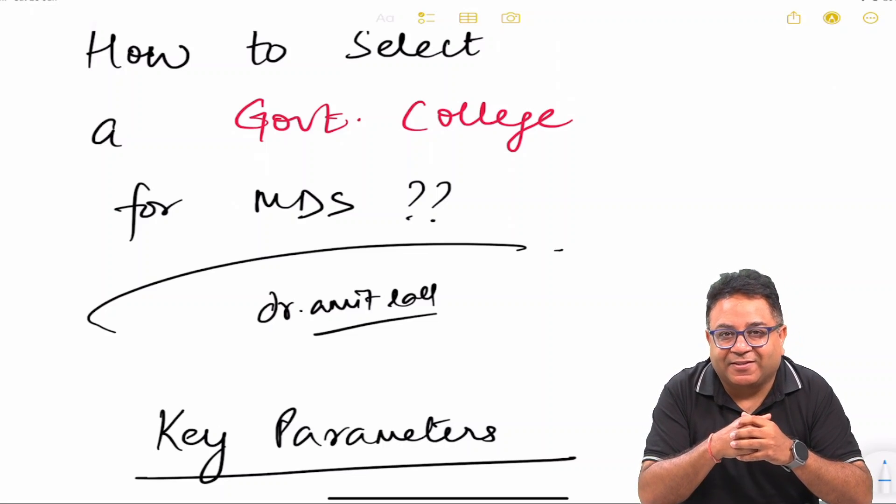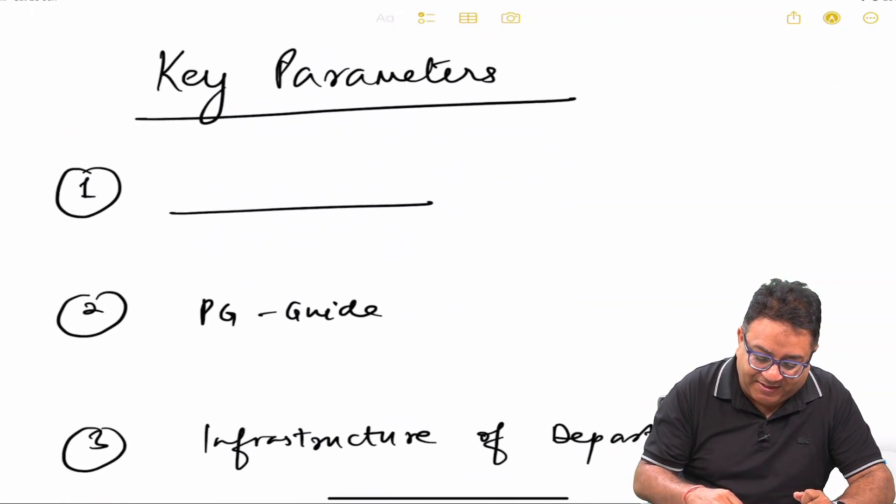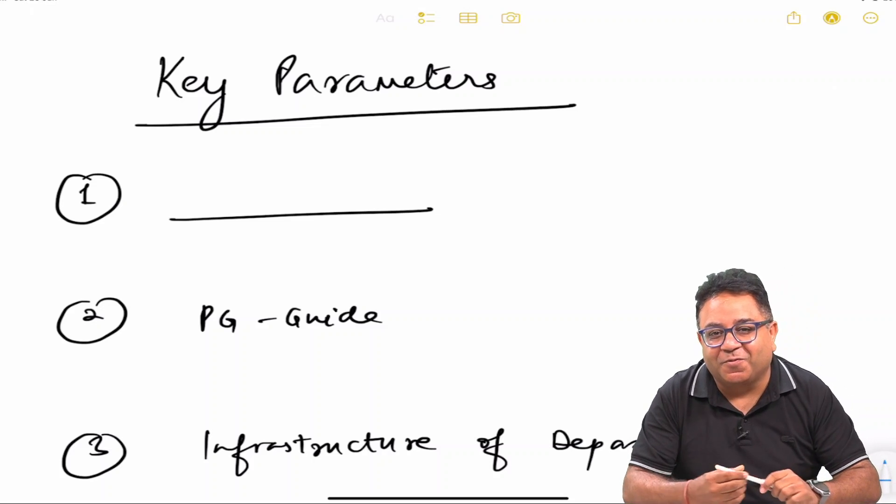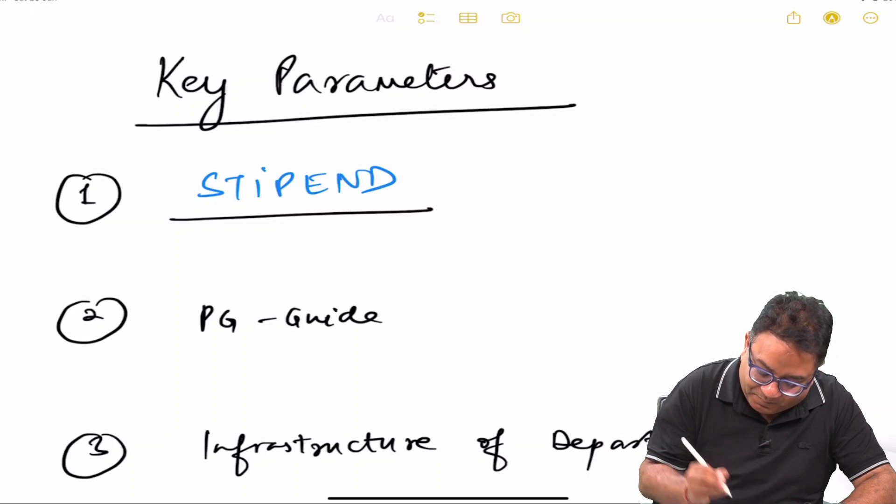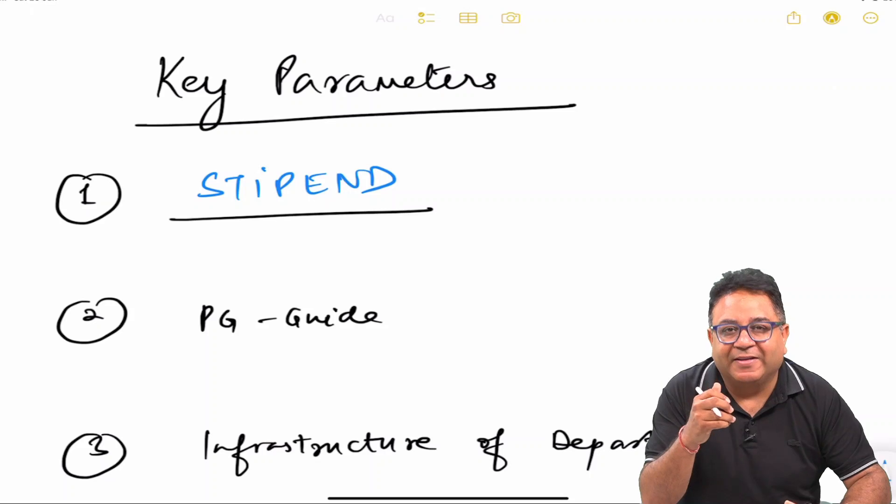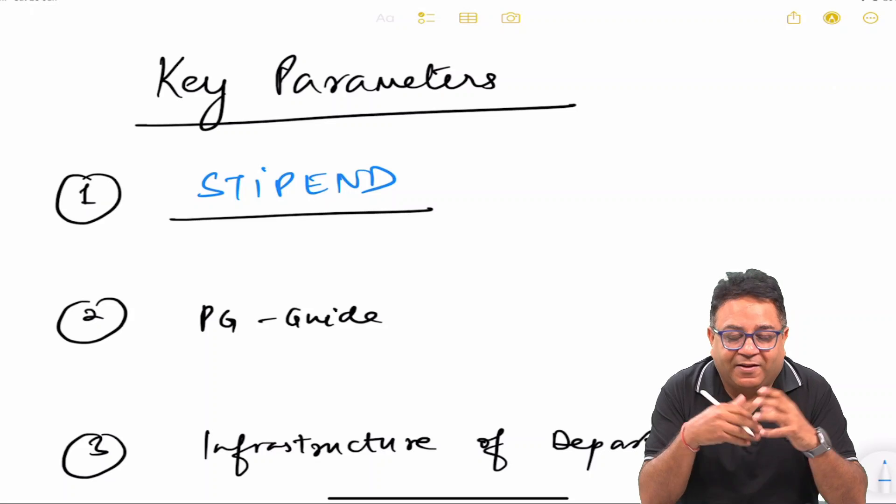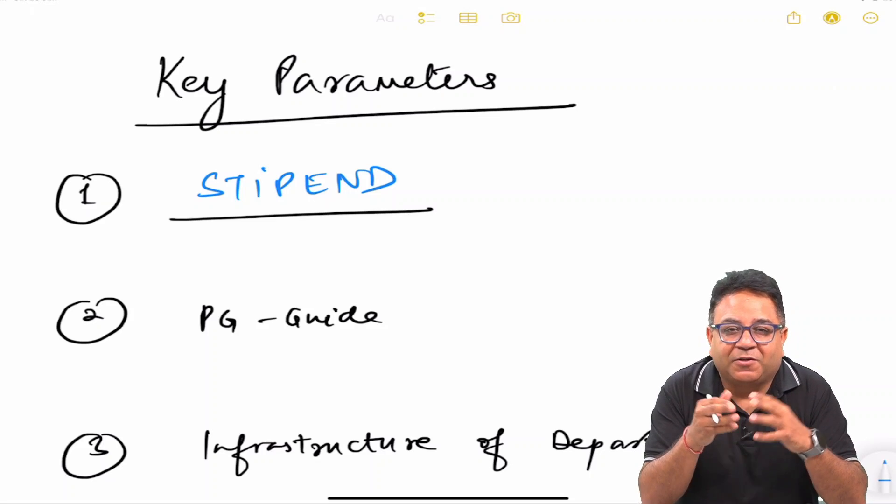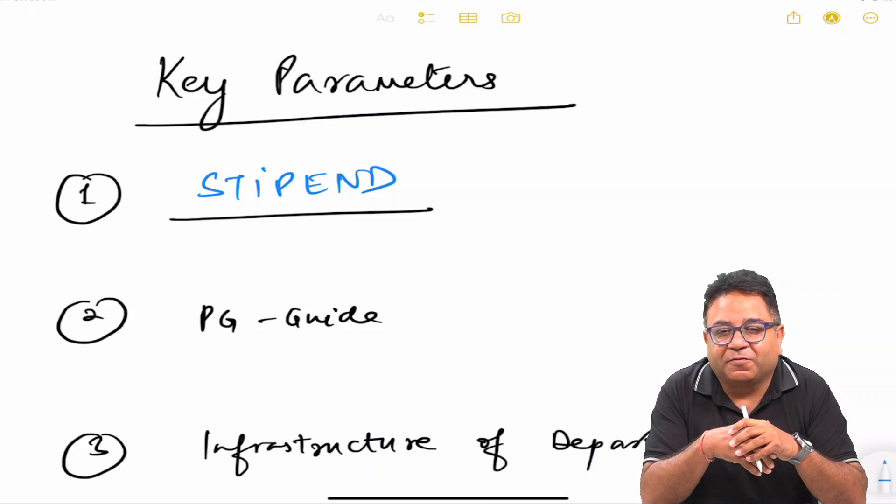The first criteria of how you select a government college is usually based on stipend. Yes, the stipend per month varies from 1 lakh plus in many colleges in North India to around 30, 40, 50,000 in many parts of the country.